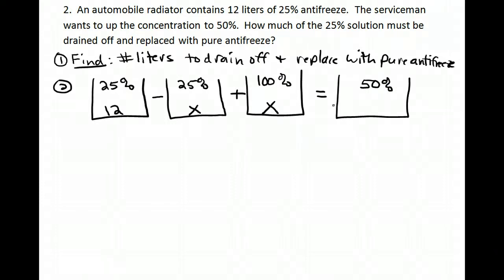If I look at what I have across the bottom, I have 12 minus x plus x, and so all together that gives me 12. I start with 12 liters, I'm going to take some out, put the same amount back, so I should end with 12 liters. Let's get our equation. Just follow the buckets: I've got 25% times 12 minus 25% times x plus 100%, that's 1.00, times x, and that equals 50% times 12.